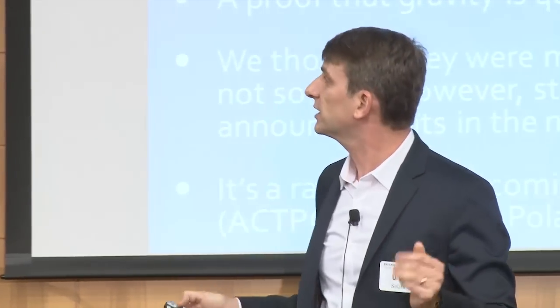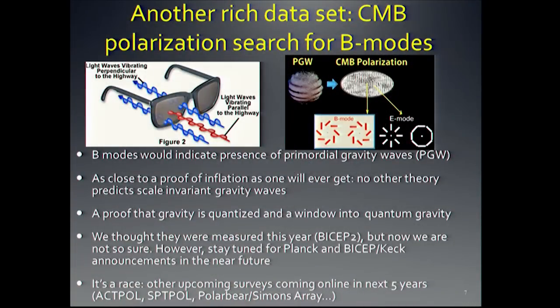I cannot give a talk about future data without mentioning B modes of polarization. The basic picture is you take the microwave background — the relic radiation from the early universe — look at its polarization, and decompose it into E modes and B modes. If you have primordial gravity waves, they can generate B modes, whereas normal scalar fluctuations only generate E modes. Detection would be as close to a proof of inflation as any, simply because no other theory predicts scale-invariant gravity waves.